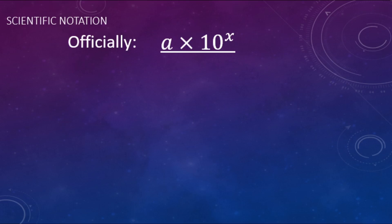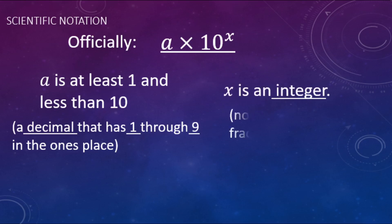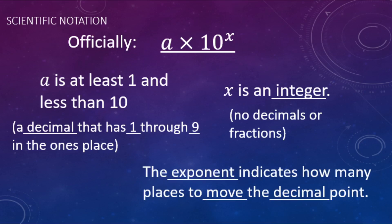When we write something in scientific notation, it takes this form: a number that is at least one and less than ten — so it starts with a digit one through nine, then a decimal point, then the rest of the digits — times 10 to some exponent. The exponent is a whole number, no fractions or decimals, and can be negative. That exponent tells you how far you're going to move the decimal point to the left or to the right.